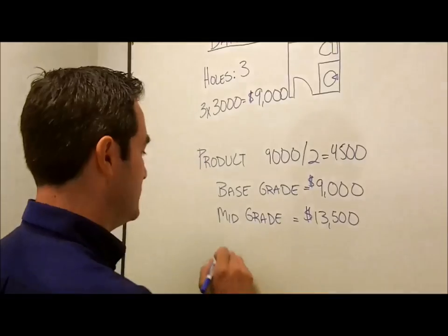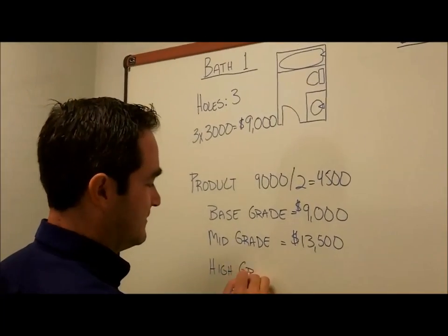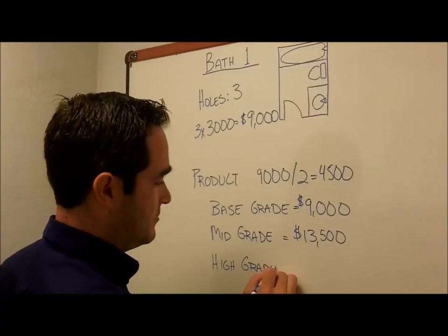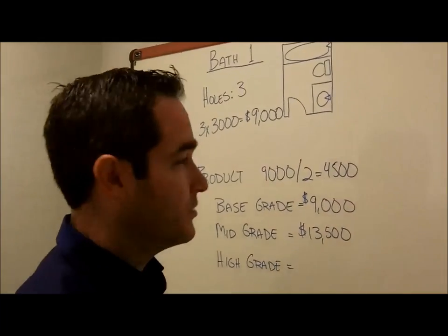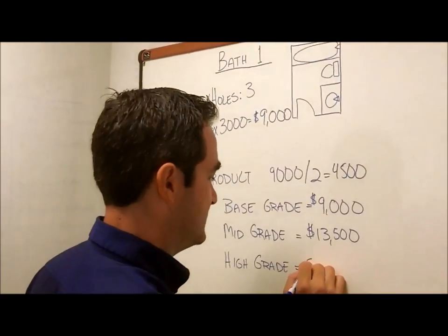Again, we want to add that product number one more time. So we want to add $4,500 to this $13,500, and that gets us an even $18,000.